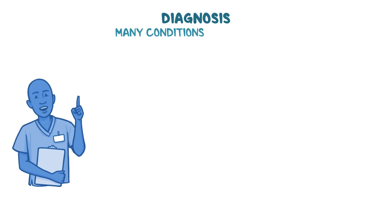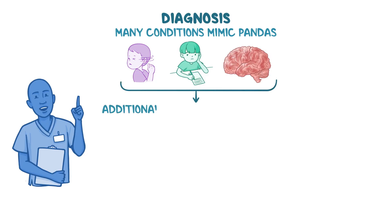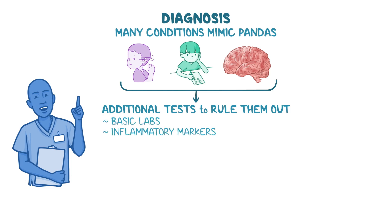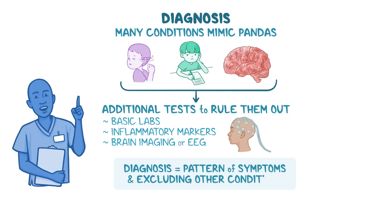There are many conditions that can mimic PANDAS, including Tourette Syndrome, anxiety disorders, and autoimmune encephalitis, which is why clinicians often order additional tests to rule them out. This may include basic labs, inflammatory markers, and in some cases brain imaging or an electroencephalogram, or EEG. Ultimately, the diagnosis relies on the pattern of symptoms and excluding other conditions, which is why PANDAS remains a debated and sometimes controversial diagnosis.